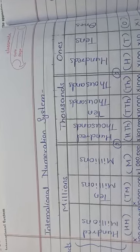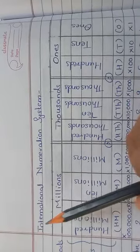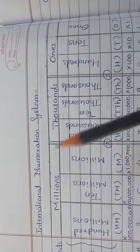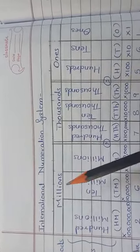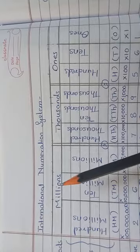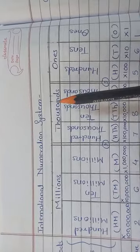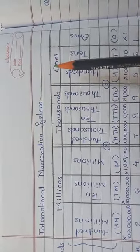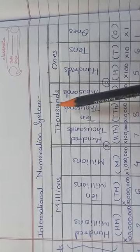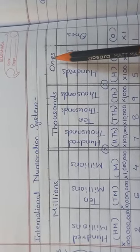Now let's study the international numeration system — the place value table. The periods in the international numeration system are millions, thousands, and ones.